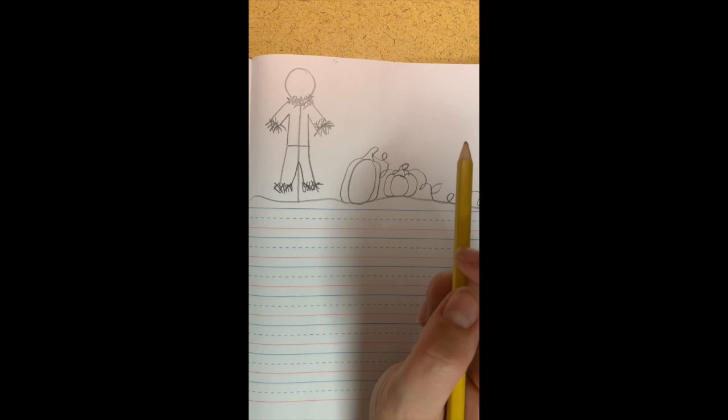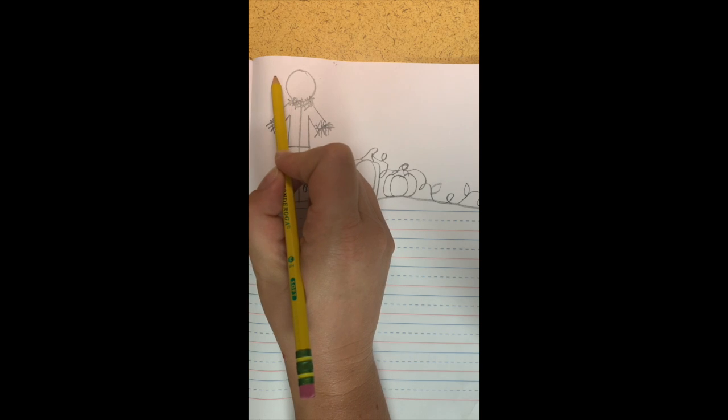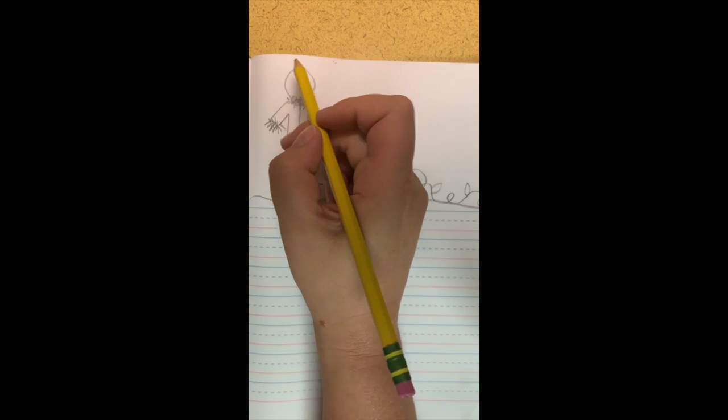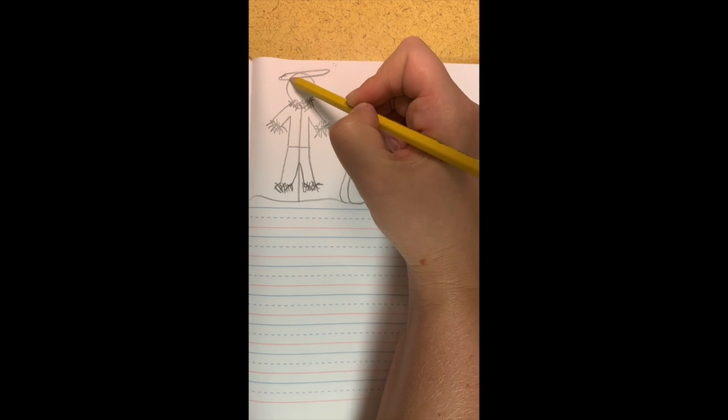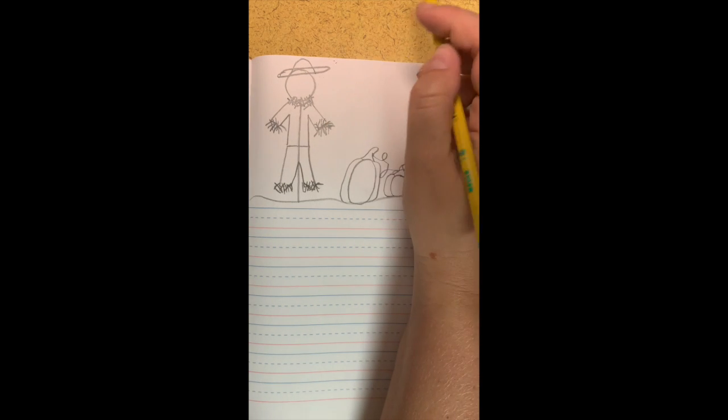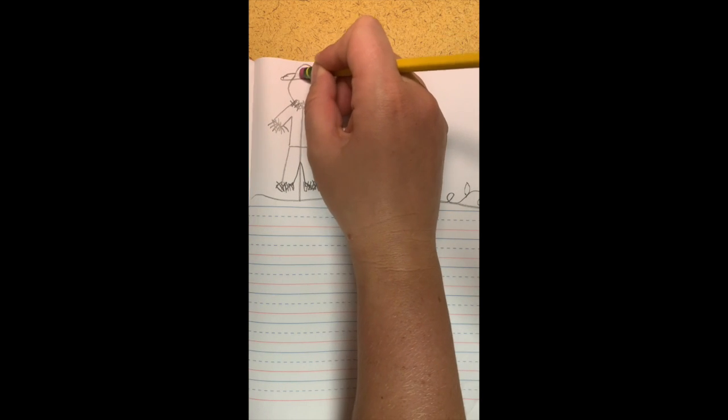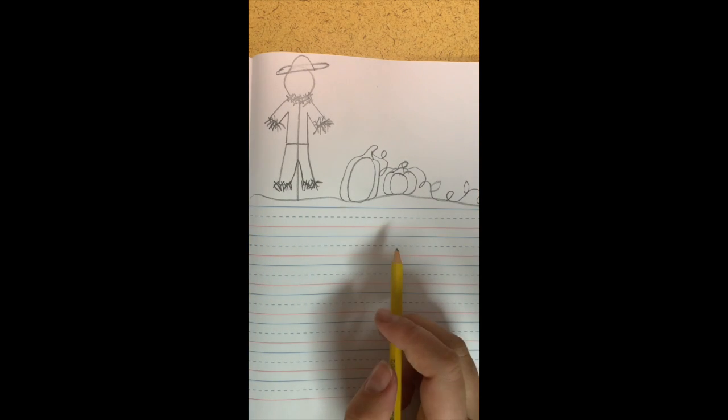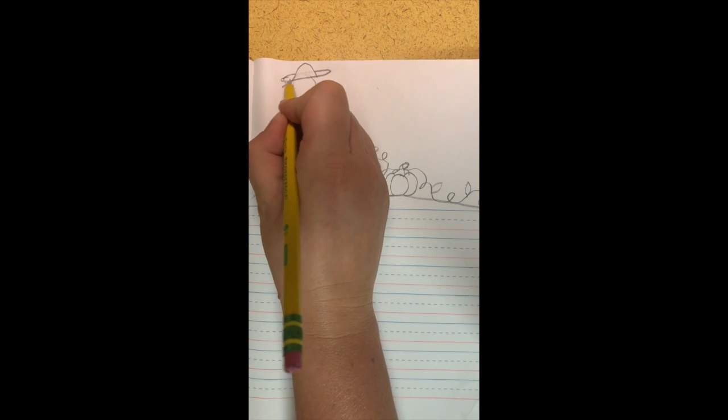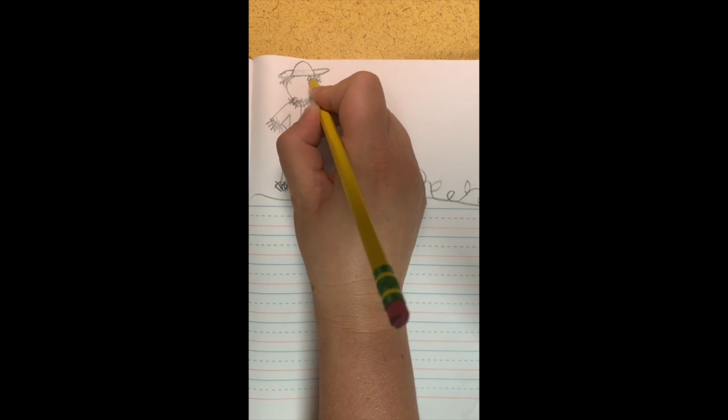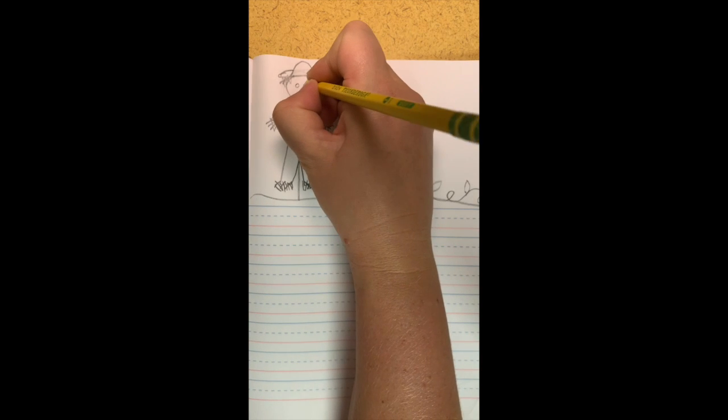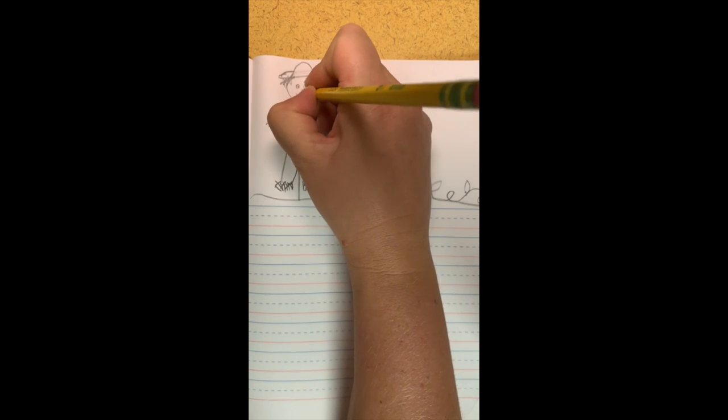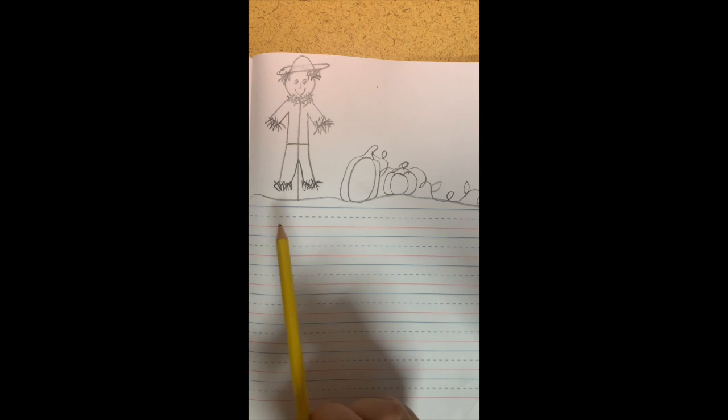Good job. Now we need to draw a hat. So I am going to draw a circle like this. And a rainbow like this. And I'm going to go in the middle there and erase that part. And maybe I have some hay coming out the sides like this, like hair. And I'm going to give him two eyes, a nose and a mouth. Now I have a scarecrow and some pumpkins.